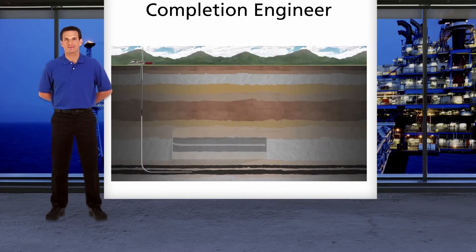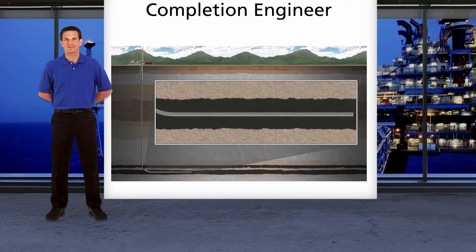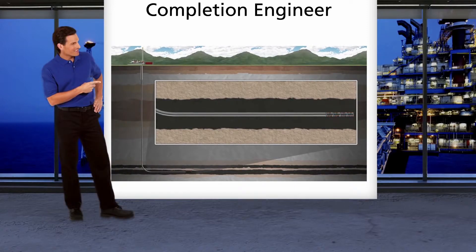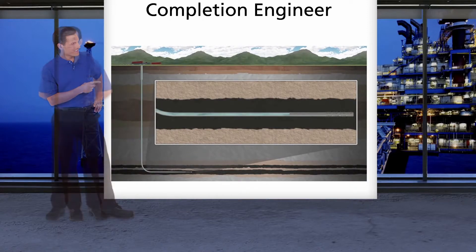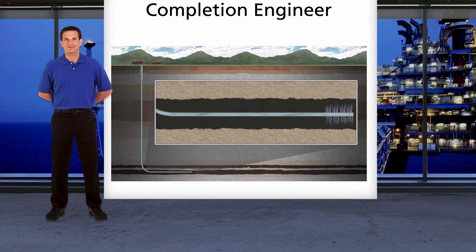My job is to complete a drilled well to get it ready for production, so I'm called a completion engineer. Completion engineers determine where we should make perforations in the casing to establish contact with the reservoir. We design any stimulation programs that are needed to increase production, such as acidizing or rock fracturing, also called fracking.